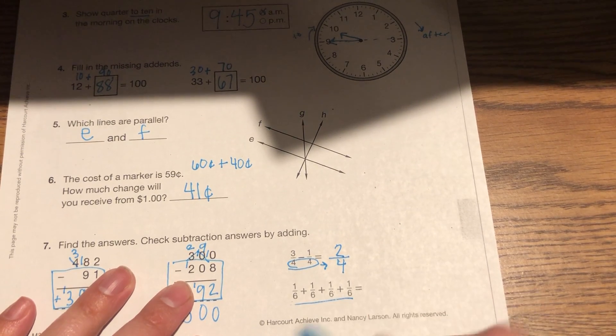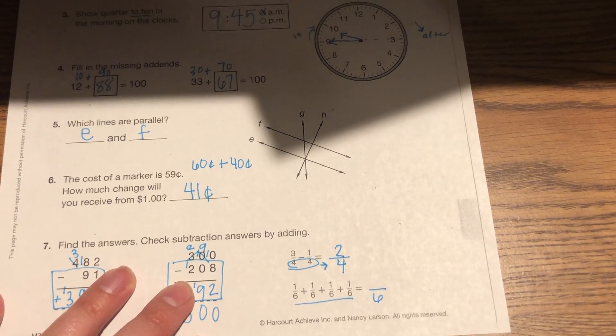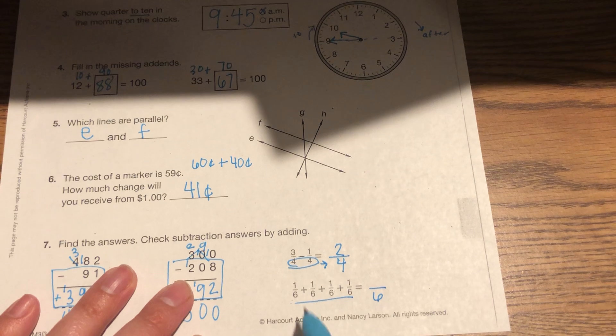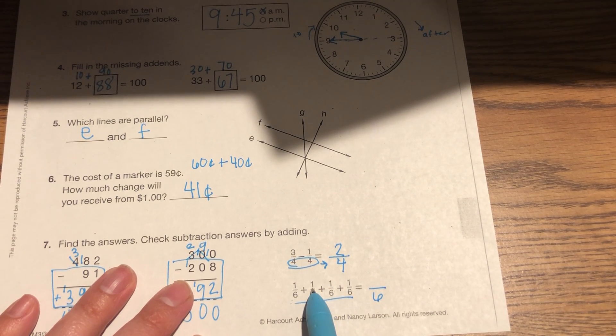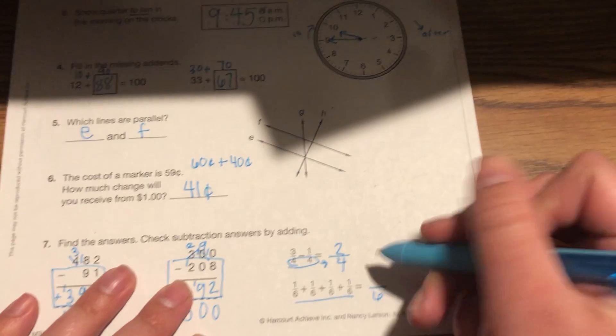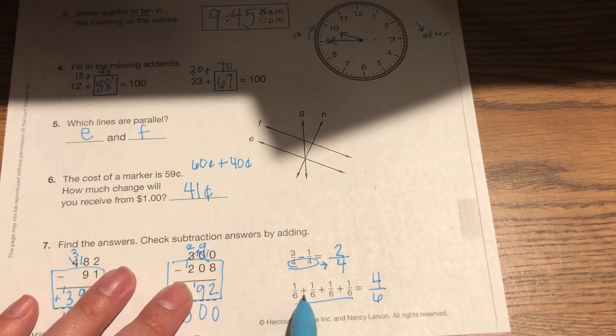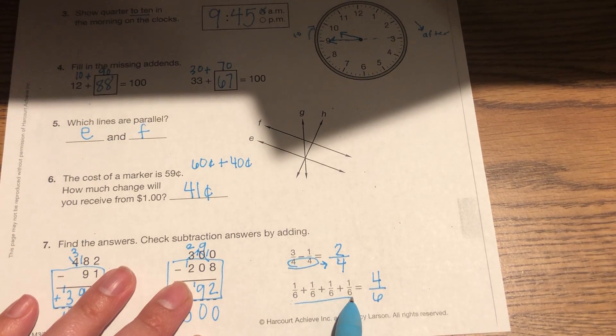Once again, I have the same denominator. So I know my answer is going to be sixths. And then I add these top numbers. 1 plus 1 is 2 plus 1 is 3 plus 1 is 4. So 1 sixth plus 1 sixth plus 1 sixth plus 1 sixth equals 4 sixths.